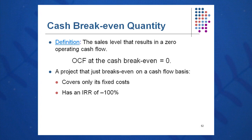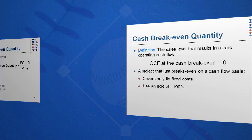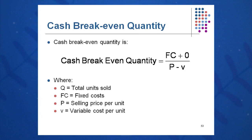The second method is cash breakeven. This is the point where OCF is equal to zero. The general breakeven quantity formula becomes fixed cost plus zero over P minus V, so OCF is zero in the cash breakeven quantity case. Here we cover just our fixed costs and we have an IRR of negative 100%. Cash breakeven quantity is fixed cost plus zero over contribution margin — it takes the generic formula fixed cost plus OCF over P minus V, where in this case OCF is equal to zero.